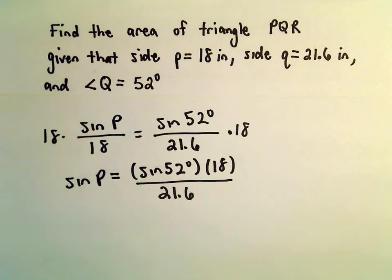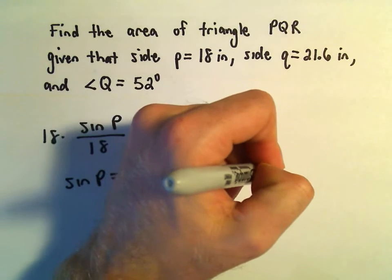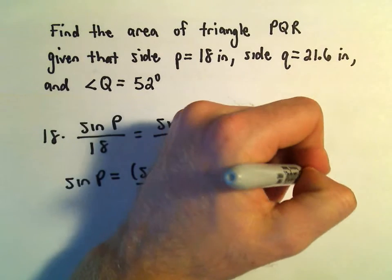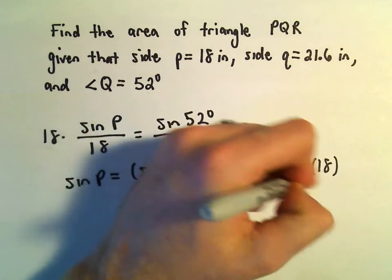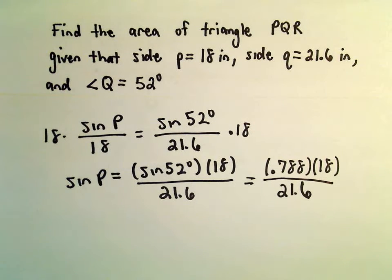Let's see, so let's do sine of 52 degrees. I'm getting sine of 52 degrees to be roughly 0.788. We'll multiply that by 18 over 21.6, so 0.788 multiplied by 18 divided by 21.6.